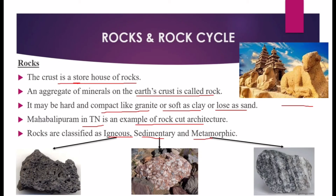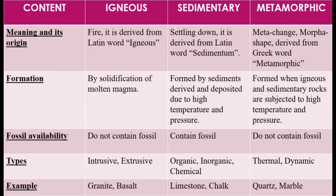Igneous rocks are hard, impermeable, do not contain fossils, and are associated with volcanic activity. They are useful for construction. Sedimentary rocks have many layers, are non-crystalline, contain fossils, and are soft and get eroded easily. Metamorphic rocks are mostly crystalline in nature and consist of alternate bands of light and dark minerals.